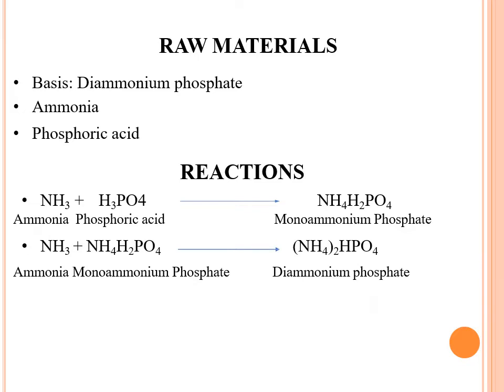In the first reaction, ammonia plus phosphoric acid gives the product monoammonium phosphate. In the second reaction, ammonia plus monoammonium phosphate gives diammonium phosphate. MAP contains only one molecule of ammonia, while diammonium phosphate contains two moles of ammonium — that is why it is called diammonium phosphate.